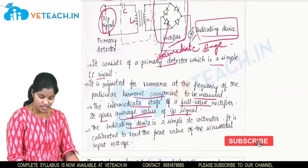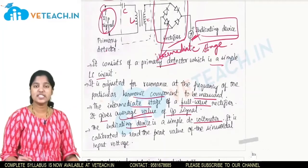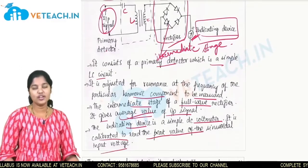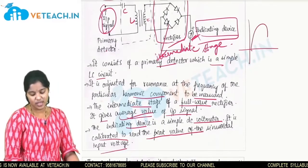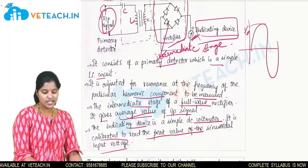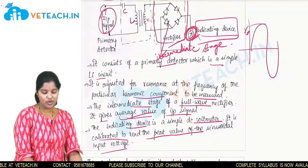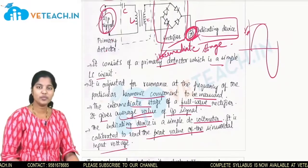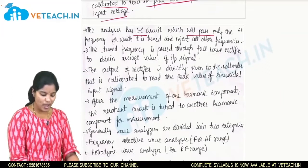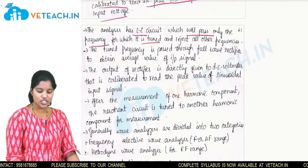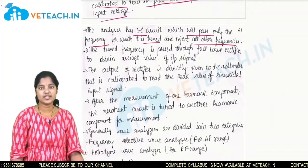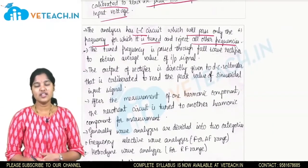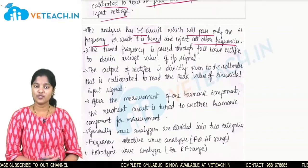The indicator device is a simple DC voltmeter calibrated to read the peak value of the sinusoidal input voltage. The analyzer LC circuit passes only the frequency for which it is tuned and rejects all other frequencies. The L and C values are adjusted according to the desired frequency which we want to measure.